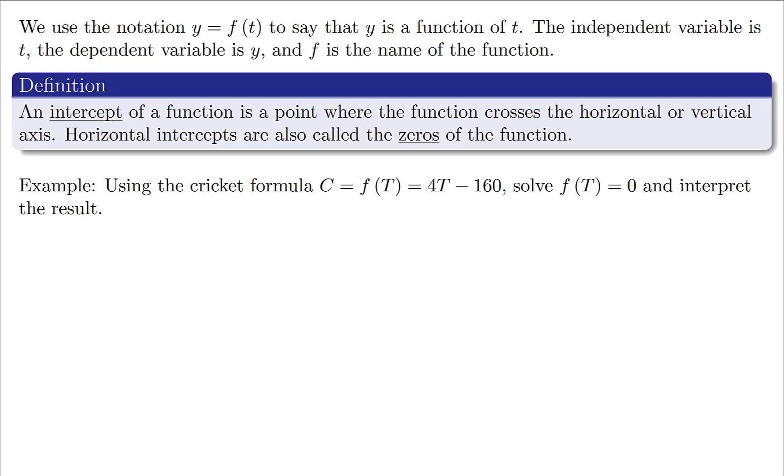From there we can talk about the concept of the intercept. The intercept of a function is where it can cross one of the axes. A lot of times we call these x-intercepts and y-intercepts, but we'll use the term horizontal intercept for x-intercept and vertical intercept for y-intercept. The horizontal intercepts are often called the zeros of the function as well.